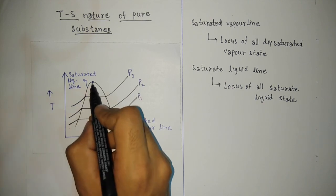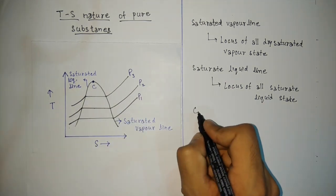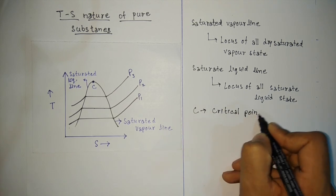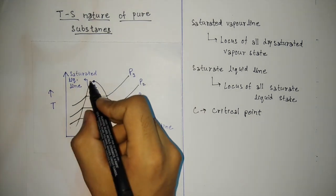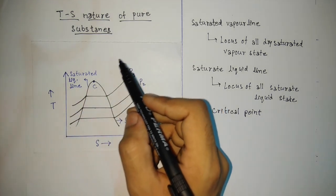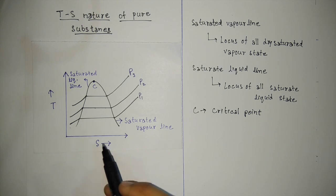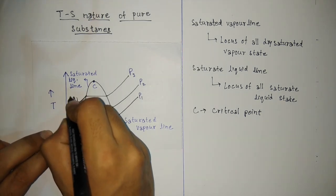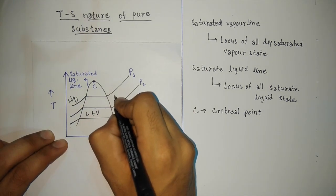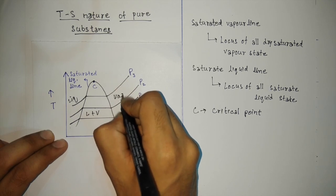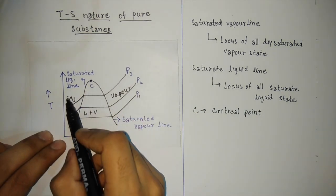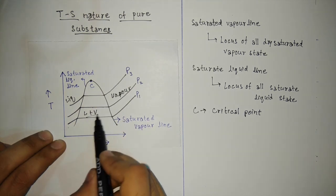The peak point of the dome is known as the critical point. Beyond this point the latent heat will be zero, meaning the liquid will directly change into vapor without going into the liquid plus vapor state. Inside the dome is the liquid plus vapor phase, while outside on the right is the fully vapor phase. So beyond the critical point, the liquid directly changes to vapor without passing through the liquid plus vapor phase.